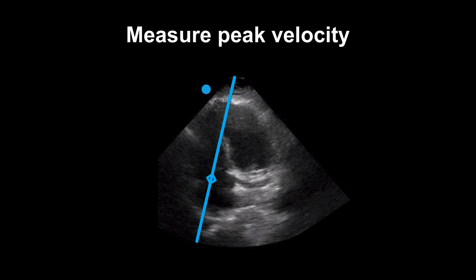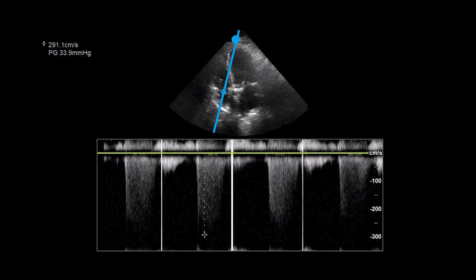Then we need to measure the peak velocity of this jet. To do this, we need to activate the continuous wave Doppler to measure the peak velocity of the regurgitant jet. We place the continuous wave Doppler at the site of the regurgitant jet, and we'll obtain a tracing such as you see here. The peaks that we see here correspond to the regurgitant jets coming back across the tricuspid valve.